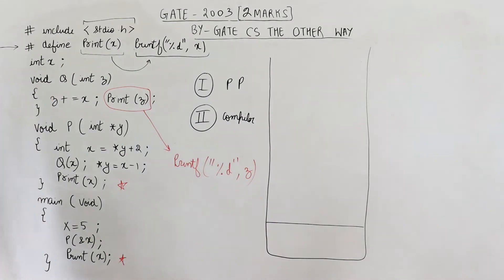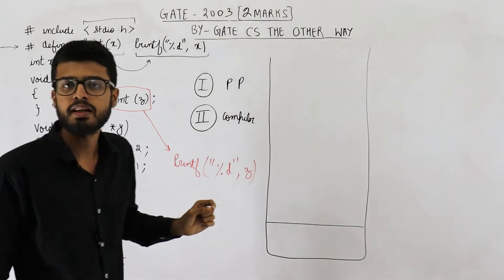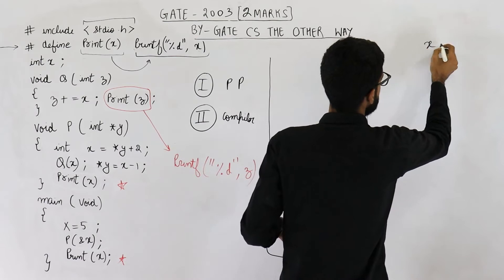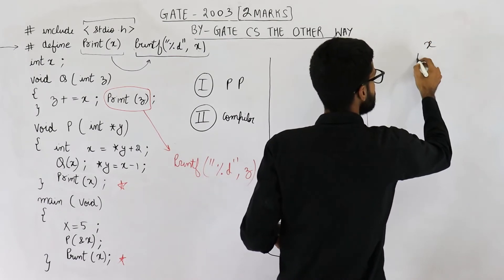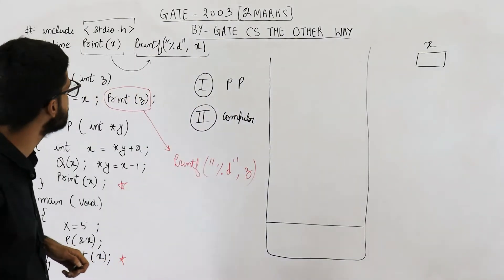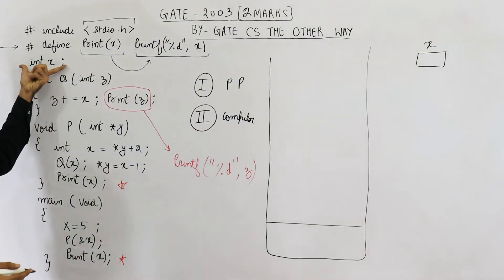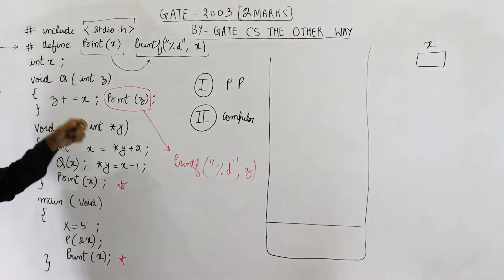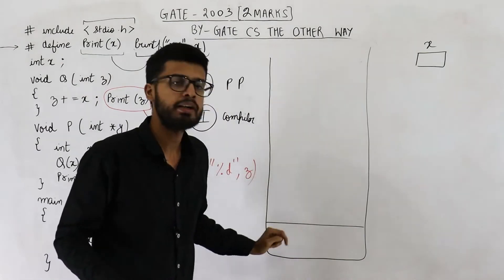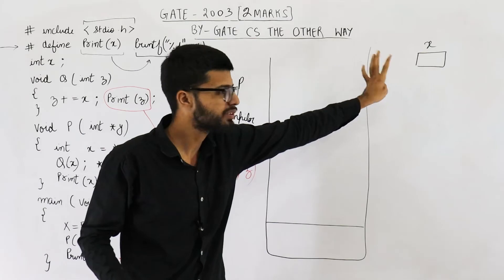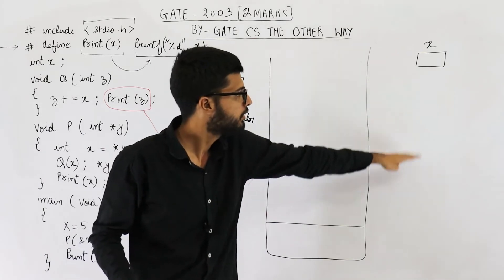Now let us analyze this code. The first line is 'int X', meaning you are declaring a global variable named X of type integer. It is not declared inside any function, hence it is a global variable. Global variables are not declared on the stack — they will be declared in the data section.